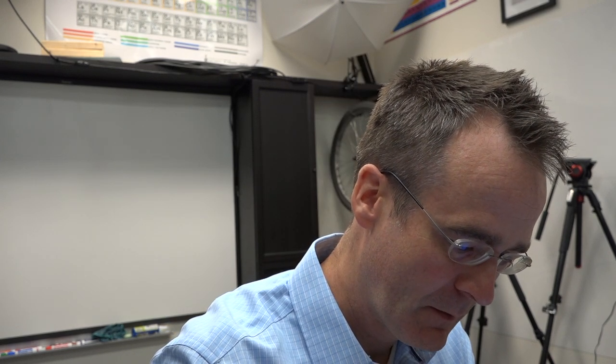I'll write that down, chromium. Brass—I mean brass is not an element—but copper, zinc, and aluminum. So there's a few examples, not that you need to memorize them, but there's some examples of metals.